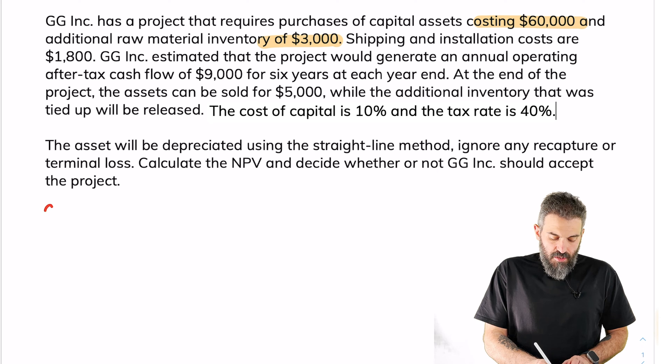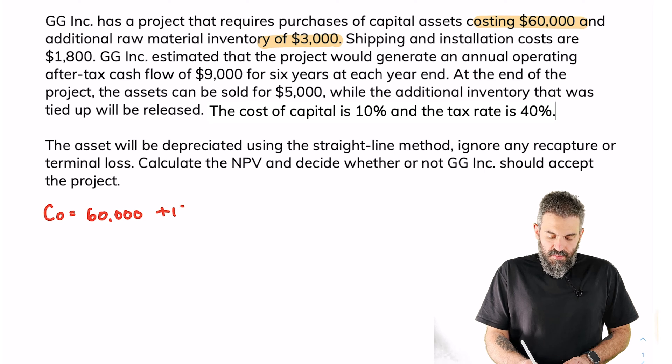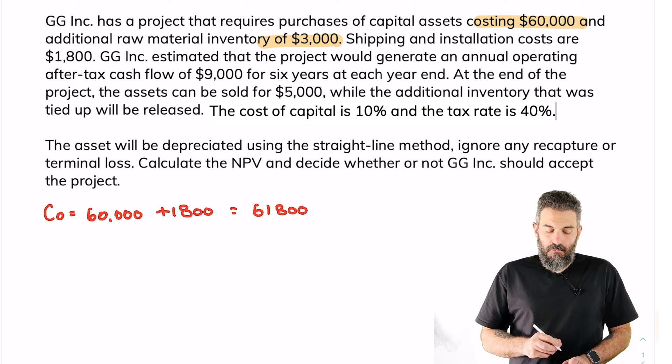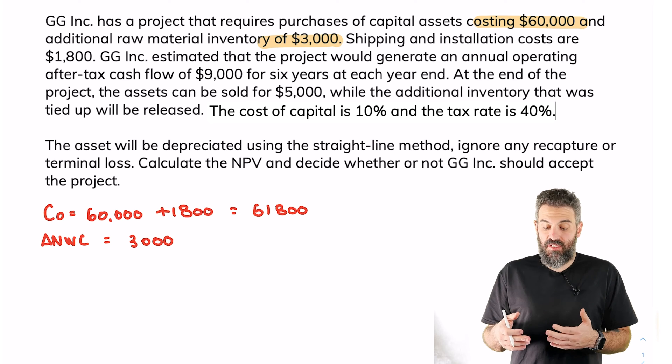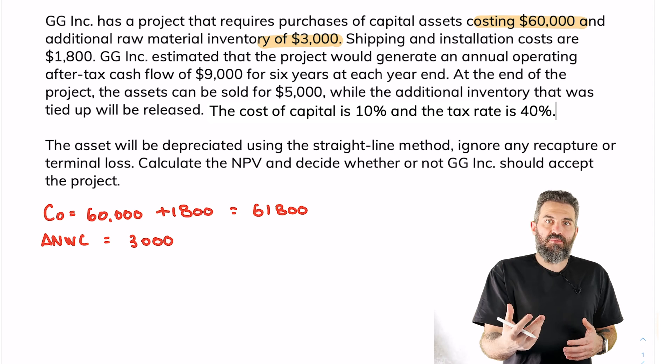So let's start writing things down. The capital cost, the asset itself, will cost $60,000 plus $1,800, so it's $61,800. The change to our networking capital at the onset of the project is $3,000, so we're not only paying $61,800 for the asset, we're also paying $3,000 for the networking capital.